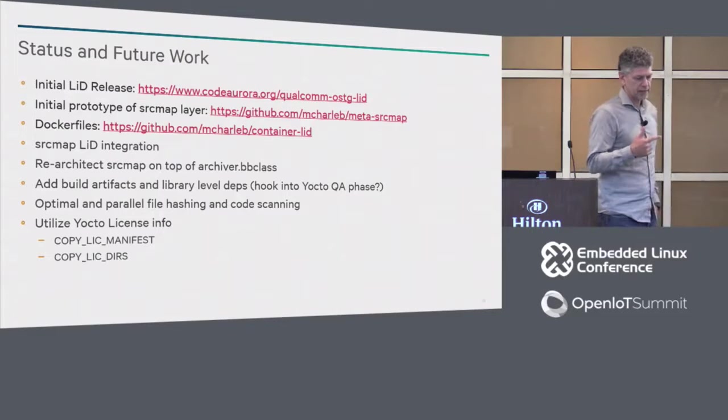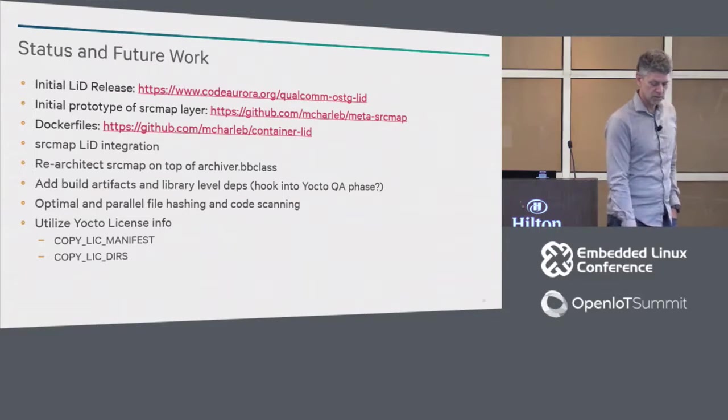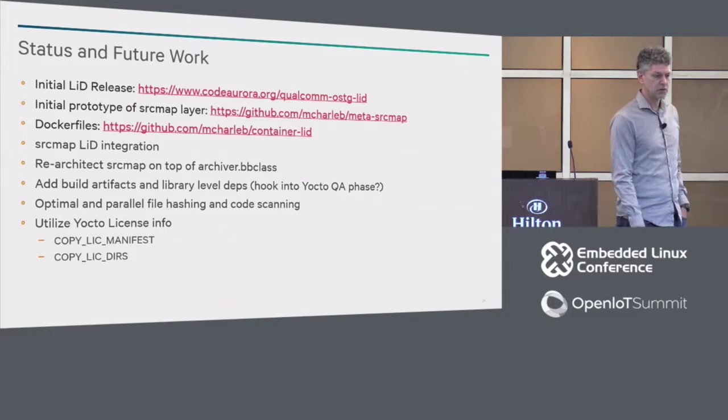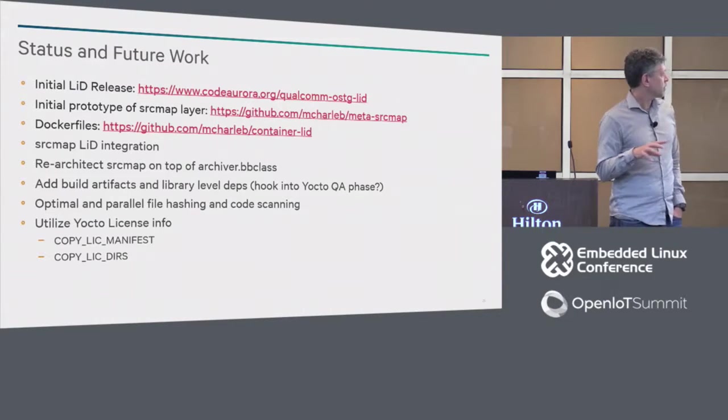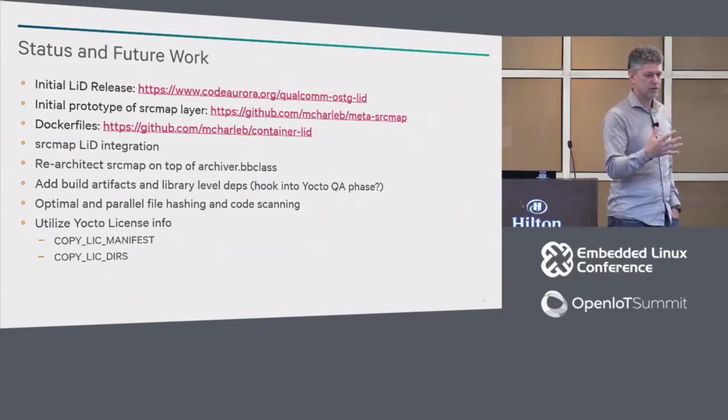The initial source map layer stuff I've been working on is on my GitHub account at github.com/msharlub. There are also Docker files there that will set up the entire environment for running LID and will pull it from calf, so you can set up a simple environment to run it and it shows all the dependencies required. The next things to do are the source map and LID integration. I didn't go too far down that road because I was still getting input from Kate and others. We just presented this at the Open Source Leadership Summit last week and got some good feedback there as well.